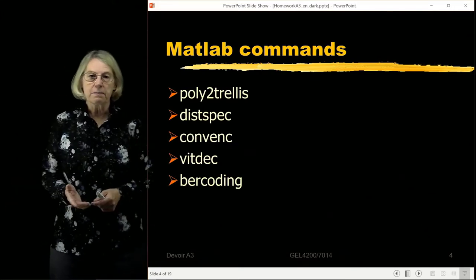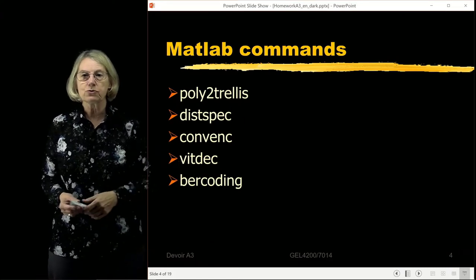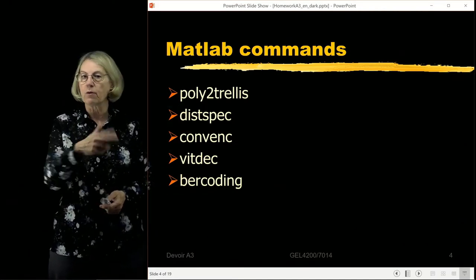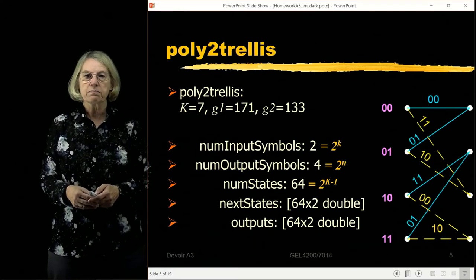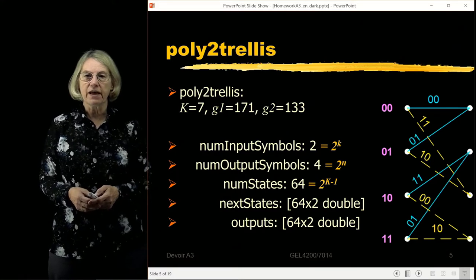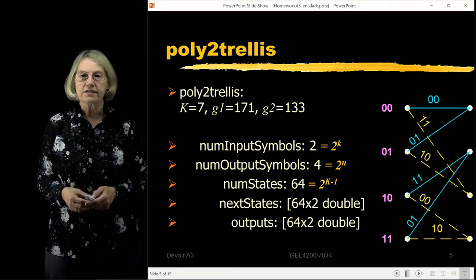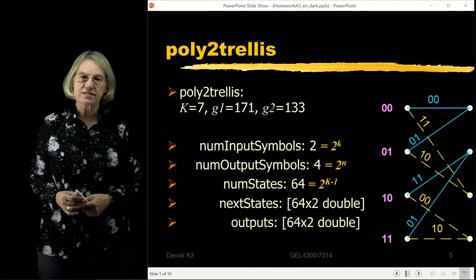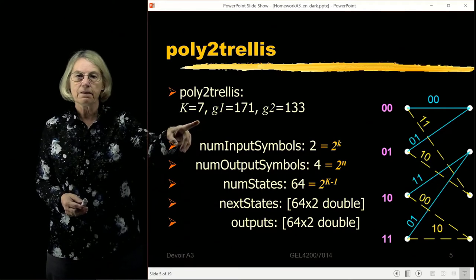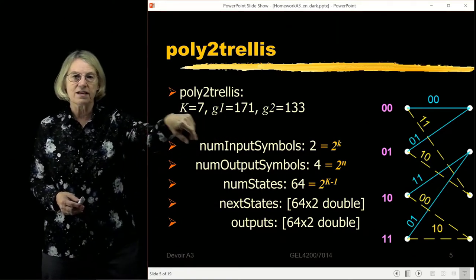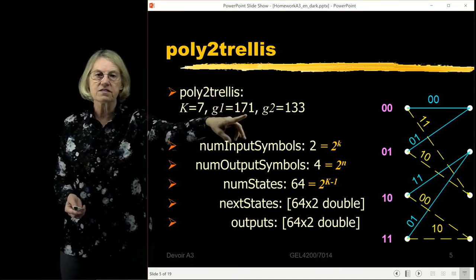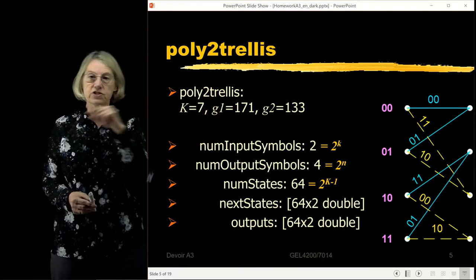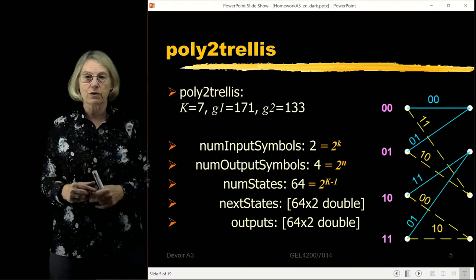Let's look at the MATLAB commands for convolutional encoding and decoding. Starting with poly2trellis — this takes a polynomial representation of the encoder and defines a MATLAB structure for the decoding trellis. For example, in the homework we might have a constraint length of seven, a first generating matrix, and a second one. This vector of connections is written in octal, which you convert to binary to know the interconnections in the hardware implementation required for one of the homework problems.